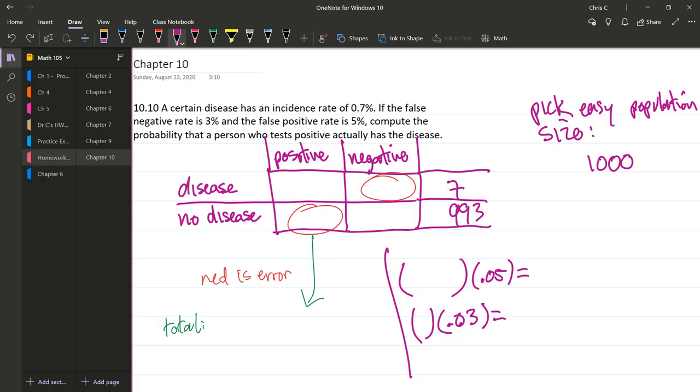We're going to pick a population size. I chose a thousand because it's an easy number - you should always choose a power of 10. I chose a thousand not a hundred because I needed to get 0.7%, and 0.7% of a thousand gives me seven people have the disease.